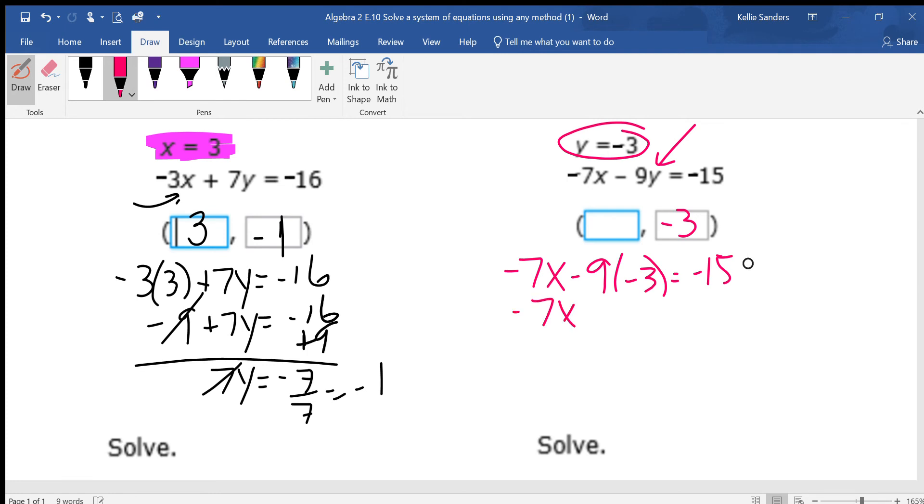Negative 7x plus 27 equals negative 15. Subtract the 27. Negative 7x equals negative 42. Divide by negative 7. So our x is a positive 6 because the negative divided by negative is a positive.